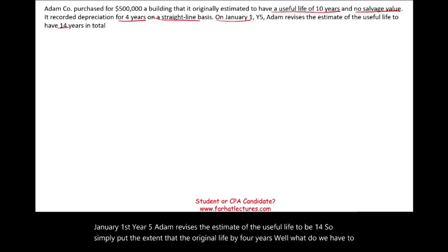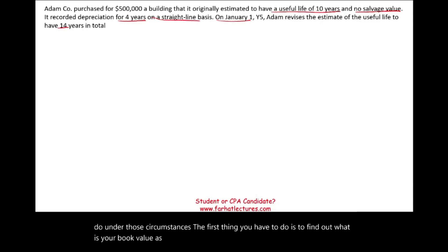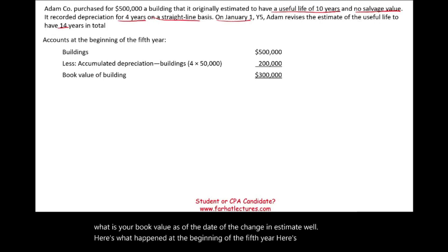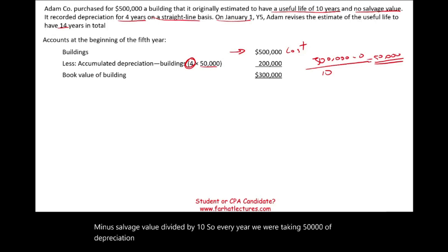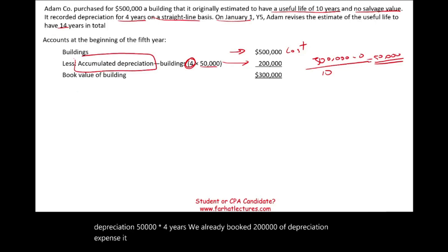Well, what do we have to do under those circumstances? The first thing you have to do is find out what your book value is as of the date of the change in estimate. At the beginning of the fifth year, here's where we stand: the building has a cost of half a million. We took four years of depreciation — that's $500,000 minus zero salvage value divided by 10, so every year we were taking $50,000 of depreciation. $50,000 times four years means we already booked $200,000 of accumulated depreciation. Therefore the book value for this building is $300,000.